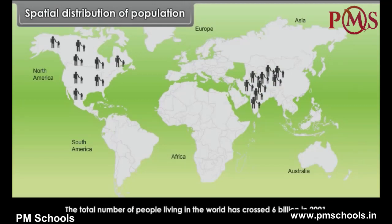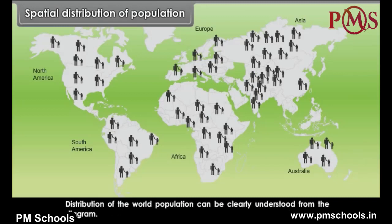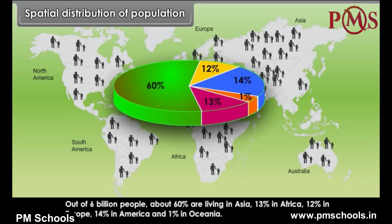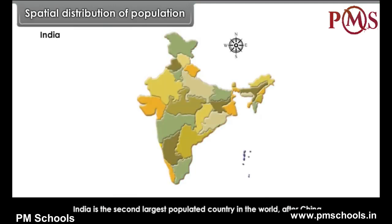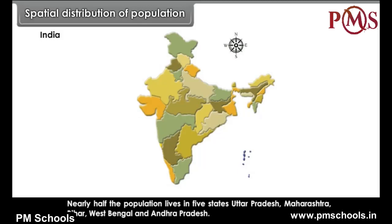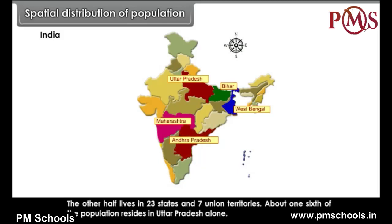The total number of people living in the world crossed 6 billion in 2001. Out of 6 billion people, about 60% are living in Asia, 13% in Africa, 12% in Europe, 14% in America and 1% in Oceania. India is the second largest populated country in the world after China. Nearly half the population lives in 5 states: Uttar Pradesh, Maharashtra, Bihar, West Bengal and Andhra Pradesh. About one-sixth of the population resides in Uttar Pradesh alone.